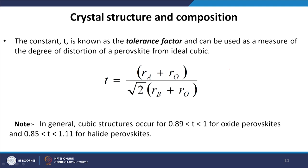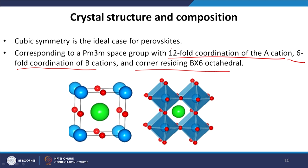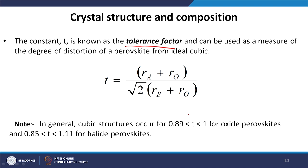When we synthesize this perovskite material, one important parameter is the tolerance factor. This constant t, also known as the tolerance factor, can be used as a measure of the degree of distortion of a perovskite from the ideal cubic. If we look back at the earlier structure, on the left hand side we have an ideal cubic structure, but the right hand side is not ideal cubic — there is a distortion from the ideal crystal structure to the perovskite structure.